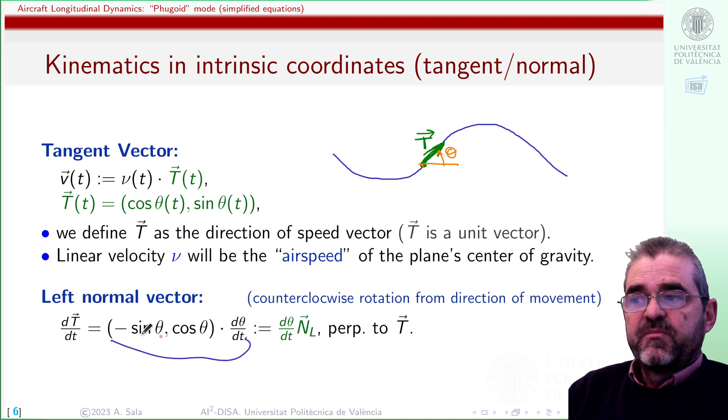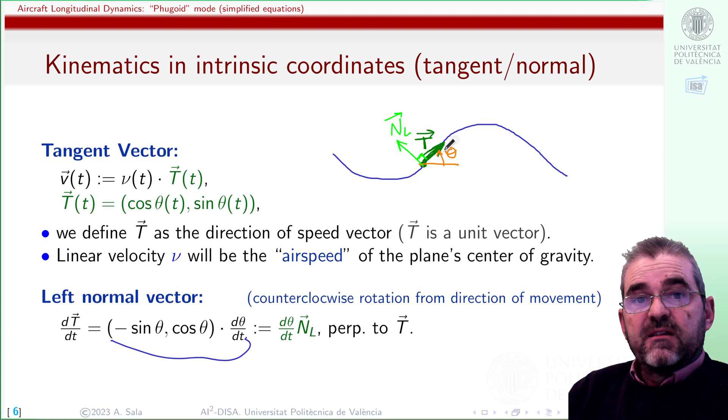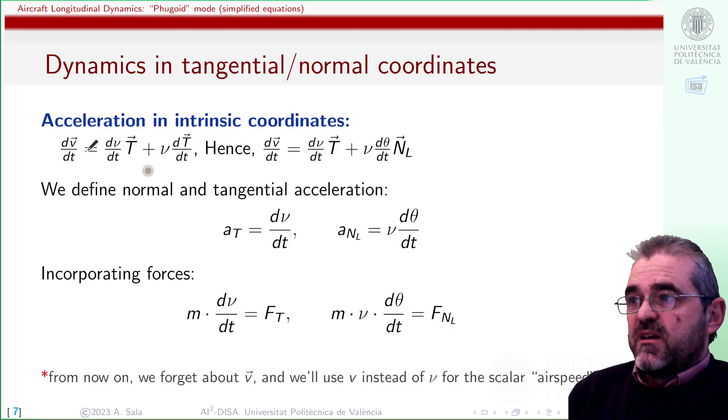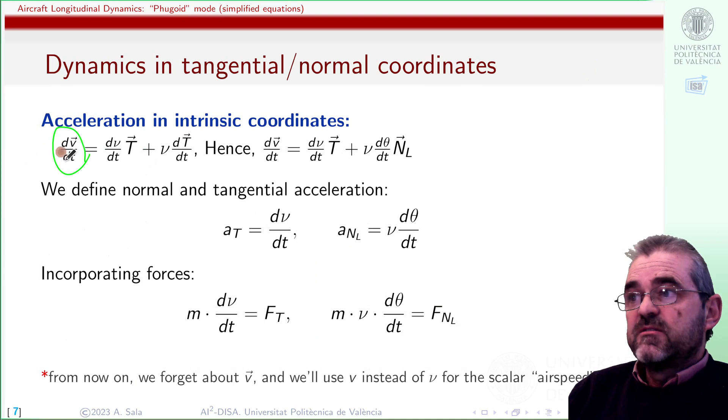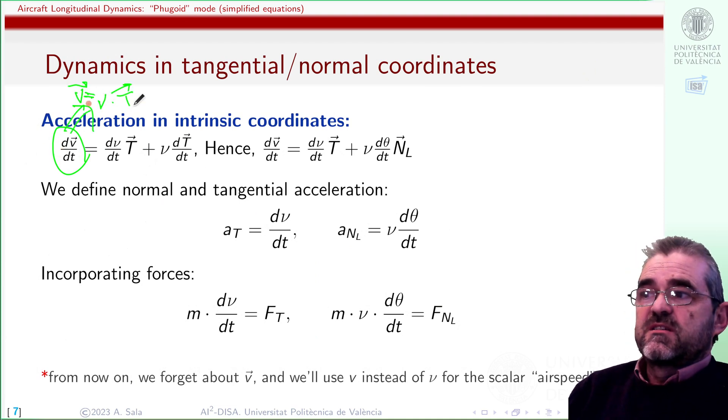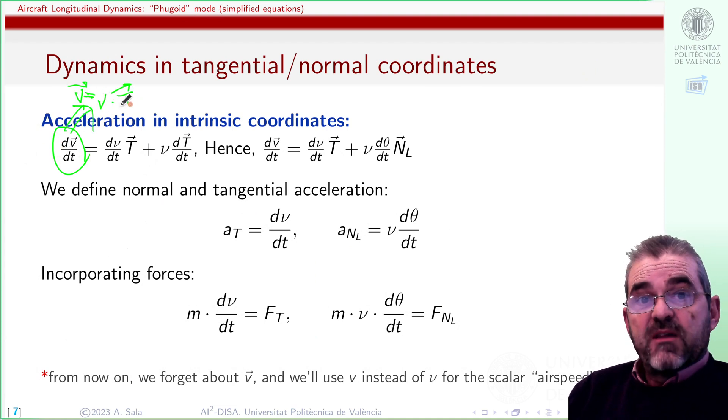And if I take the time derivative of this tangent vector, then I get this expression and this minus sinus cosinus vector, I will call it normal left, resulting from turning the tangent vector 90 degrees in the counterclockwise direction. Then dynamics will be based in acceleration equals force divided by mass. So acceleration will be the time derivative of the velocity vector, which is this product.